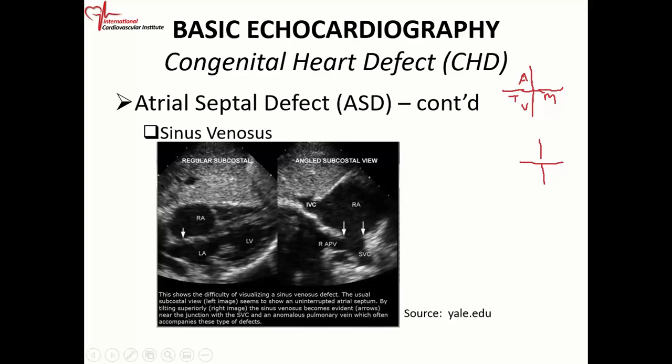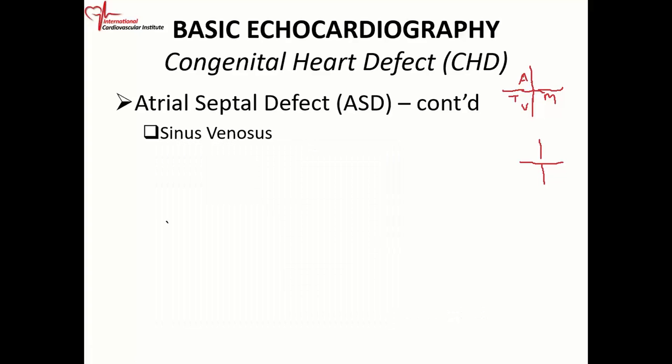You can get a sinus venosus defect very high in the atrium involving the superior vena cava, or even involving the inferior vena cava.